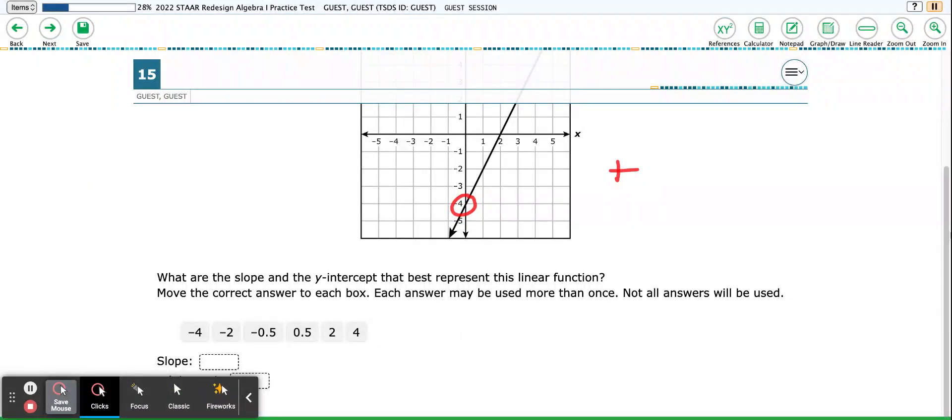So I'm going to select my negative 4. It says each answer may be used more than once. Not all answers will be used. And there are 1, 2, 3, 4, 5, 6 answers. So I want negative 4 as my y-intercept. So I'm going to take that, and I'm going to drag it to that box right there. So I've got my y-intercept answer.